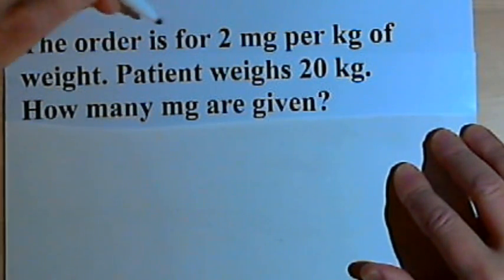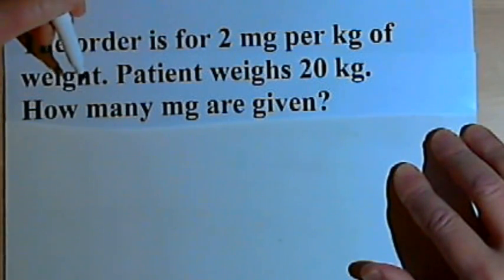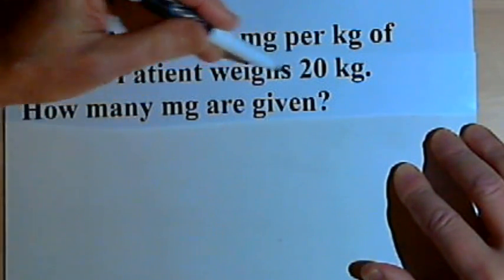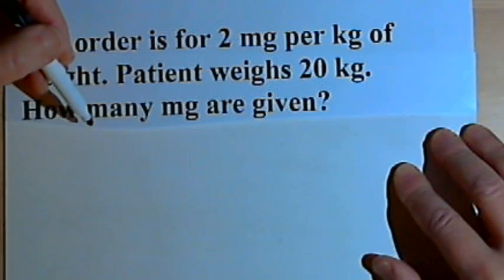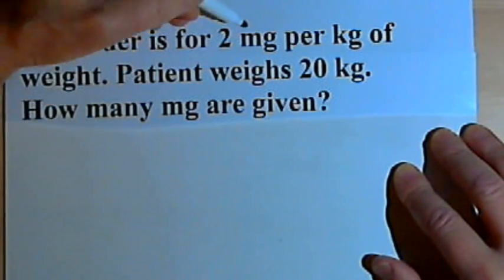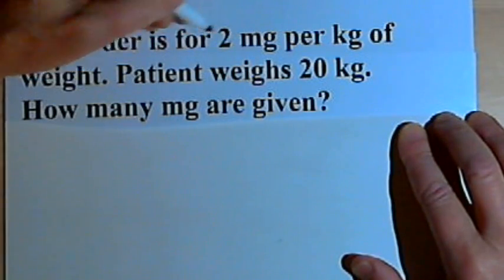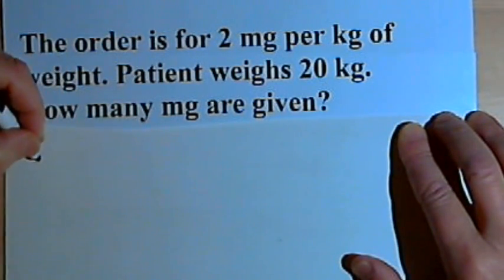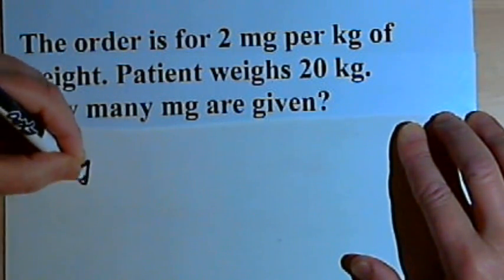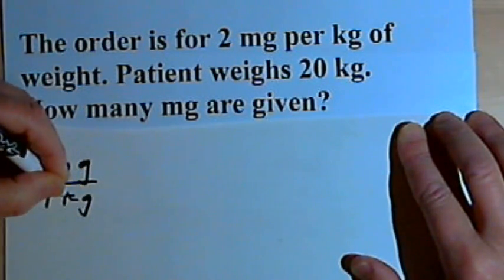This says the order is for 2 mg per kg of weight, and the patient weighs 20 kg. We want to know how many mg are to be given. So as we usually do, we'll start out with the order. That's going to be a fraction: 2 mg over 1 kg.